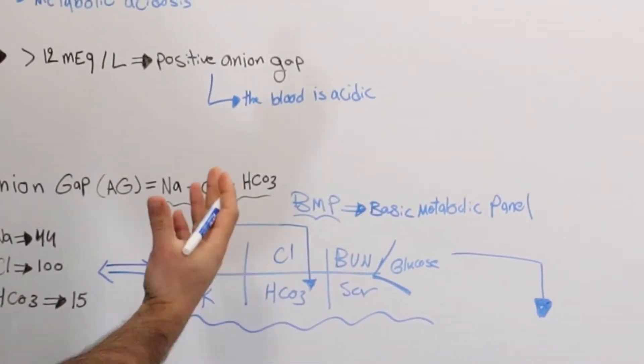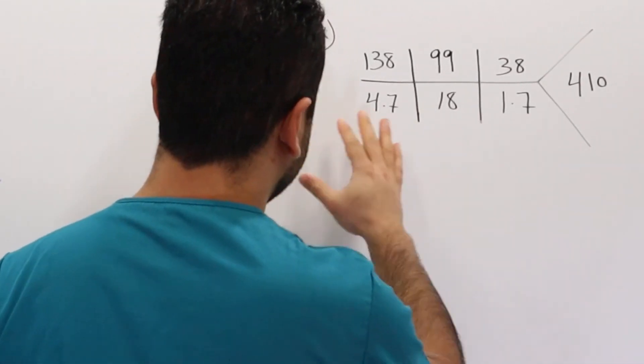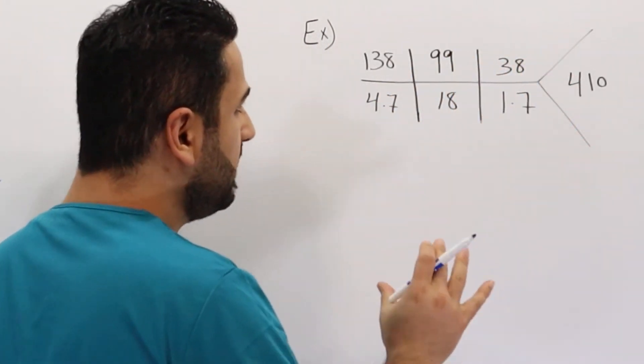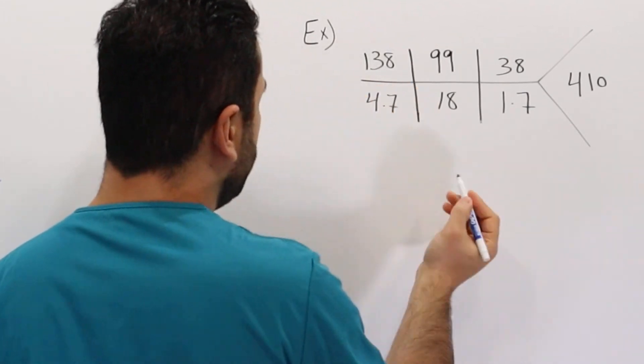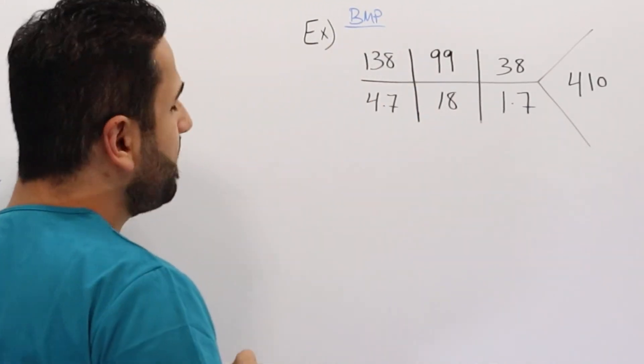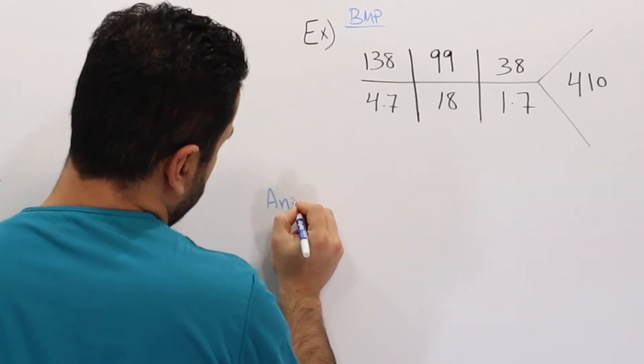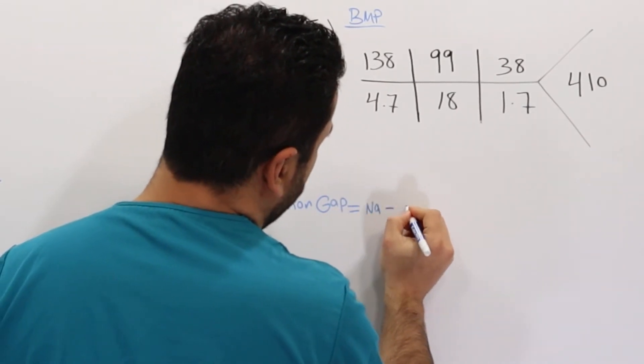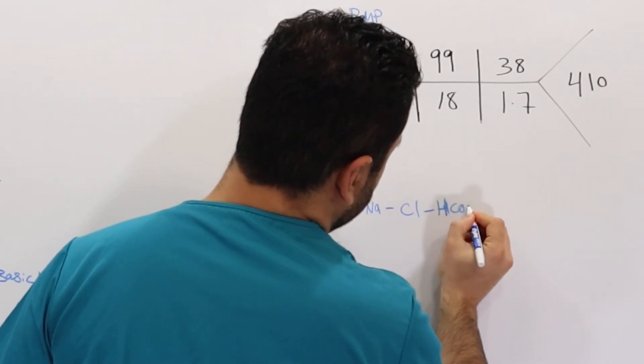So let's take an example to better understand what anion gap is. In this example, just like I said, BMP, I have been given this fishbone with values. And this is why it's really important to be able to tell what each value represents. So this is basically the BMP, basic metabolic panel. And what we're looking for, anion gap, is basically sodium minus chloride minus HCO3 or bicarbonate.